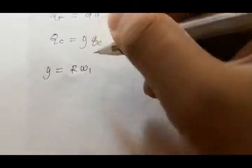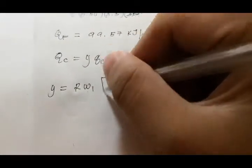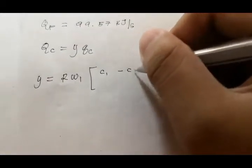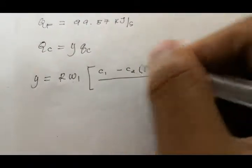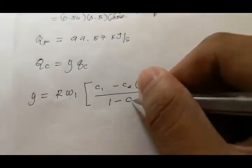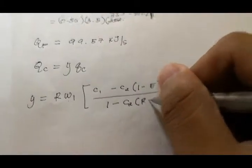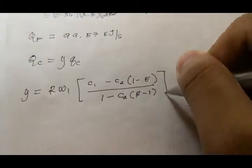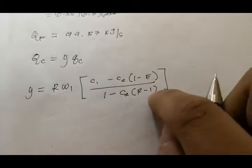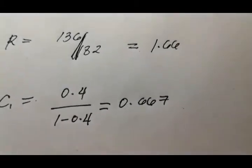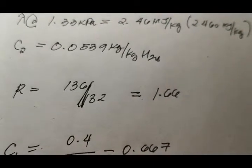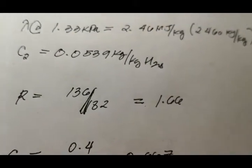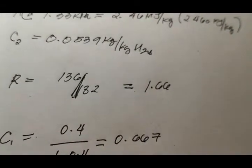So we have this shortcut formula for the yield of crystal provided by Colson itself. Y equals RW1 multiplied by (C1 minus C2) times (1 minus E) all over (1 minus C2) times (R minus 1), where R here is defined as the ratio of the molecular weight of the hydrated crystal to that of the anhydrous crystal.